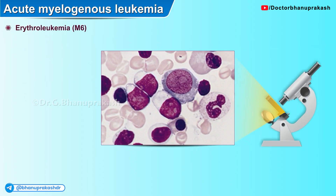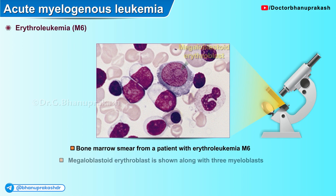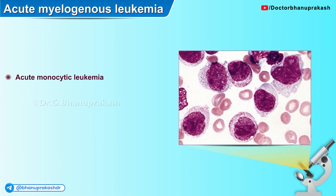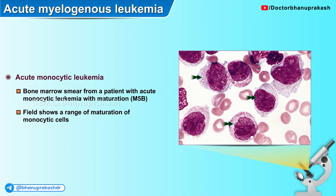Here is a histopathological image of a bone marrow smear from a patient with erythroleukemia. A megaloblastoid erythroblast is shown along with three myeloblasts. The following image shows a bone marrow smear from a patient with acute monocytic leukemia with maturation, and this field shows a range of maturation of monocytic cells.